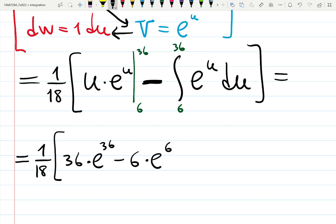So we're going to write down: equals, let's distribute 1 over 18—well, let's keep it, doesn't matter. 36 times e to the 36 minus 6 times e to the 6—that is the first term—minus the integral of e to the u, which is e to the u, evaluated from 6 to 36.